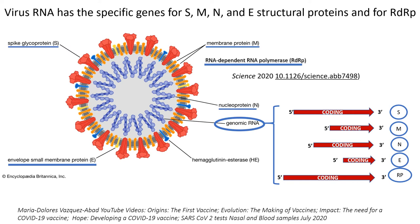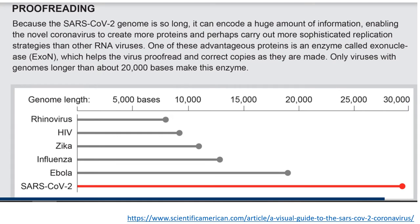Finally, there is a gene for a functional protein — the RNA-dependent RNA polymerase, described in a 2020 science paper. Looking at a paper from Scientific American called 'A Visual Guide to the SARS-CoV-2,' a simple schematic compares the genome length with known viruses and coronaviruses. The key message is evident: the genome of SARS-CoV-2 is super long — longer than many other viruses we know — meaning there are a lot of genes beyond the structural ones that can provide this virus with some advantages.